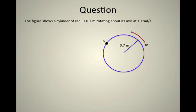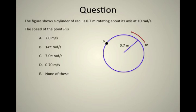we could ask how fast, in a linear sense, is a point P traveling in linear velocity. The speed of point P is going to be one of these choices. Can you imagine what the correct answer is going to be?